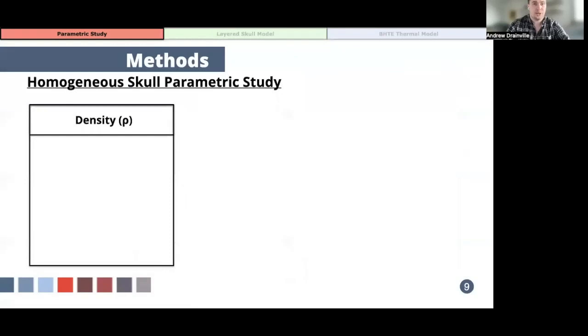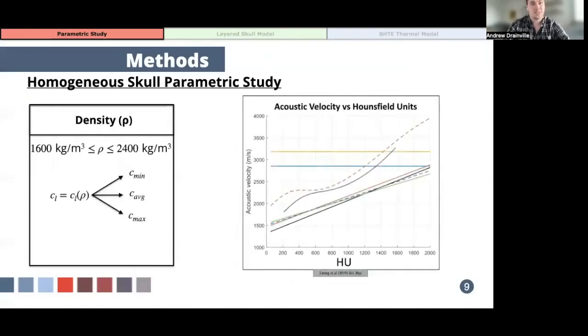So for parametric study looking at changes in material properties, we'll be focusing on skull density, wave speed, and attenuation. To examine the role of uncertainty in the skull density, simulations were performed with the skull density that varied between 1600 and 2400 kilograms per cubic meter. For each density value, simulations were performed with three different speed of sound values which were given by the minimum, maximum, and average speed provided across all conversion algorithms described by Lange et al with a phase correction profile based on the average speed of sound value in order to examine the effect of uncertainty that exists between these different conversion algorithms.